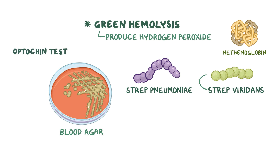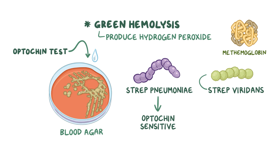That's where a few drops of optocin are added to the culture. Strep pneumoniae are optocin-sensitive, meaning the bacteria die after adding optocin, whereas strep viridans are optocin-resistant, meaning they survive.